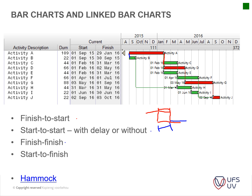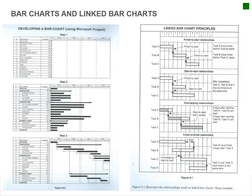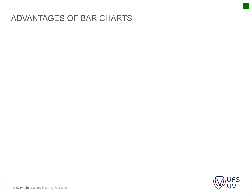Finish-to-finish means when one item is finished, the other should be finished as well. Start-to-finish means when one starts, the other should be finished. The most important thing from this chapter for you is developing your bar chart: first list your items, then schedule the time periods, and then link them accordingly. Those are the main steps you go through when doing your scheduling.